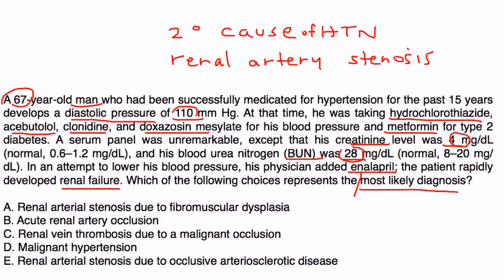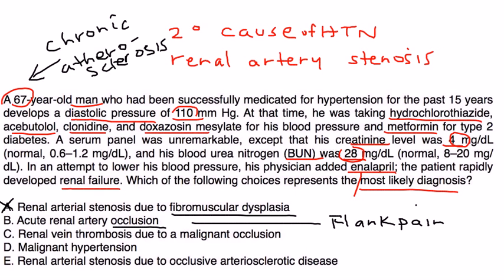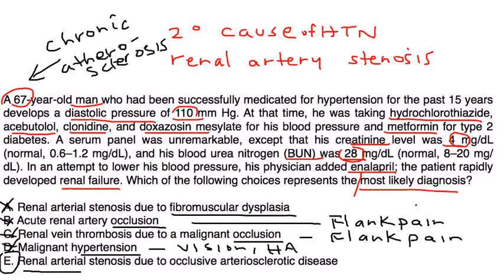Which choice is right? Renal artery stenosis due to fibromuscular dysplasia doesn't fit — he's 67, not young. Acute renal artery occlusion doesn't fit either, because occlusion presents with flank pain and other symptoms he doesn't have. Malignant hypertension would present with blurred vision, headache, and other symptoms. By default, the correct answer is renal artery stenosis due to atherosclerosis or arteriosclerotic disease, given his age and chronic presentation.